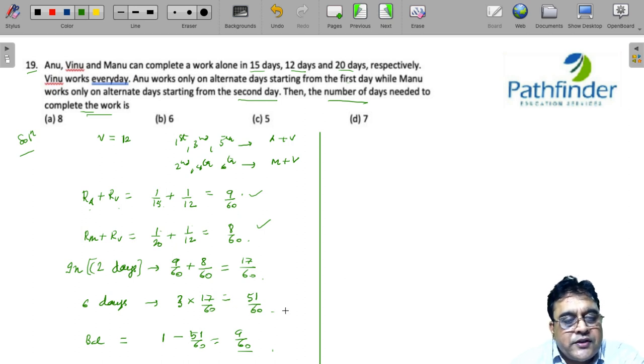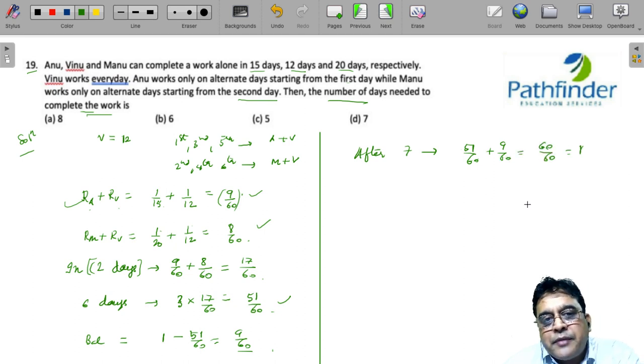So in 6 days, 51/60 work is done. On the 7th day, because it is an odd day, Anu and Vinu will work and they will complete 9/60th of the work in one day. So after 7 days, the total work is 51/60 plus 9/60, which is 60/60, which is 1. So the total work is completed and it requires 7 days in all.